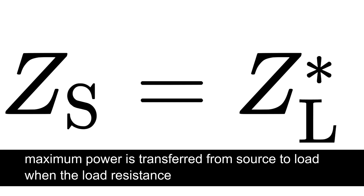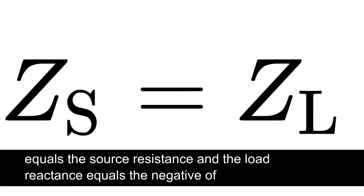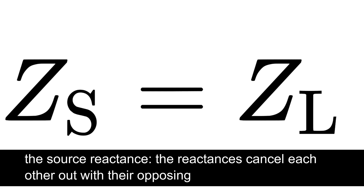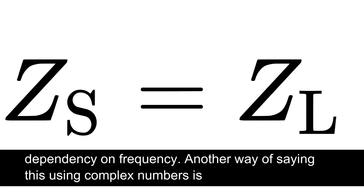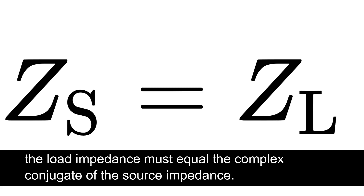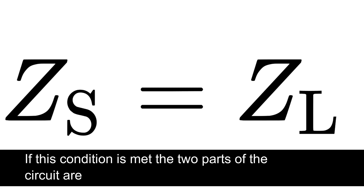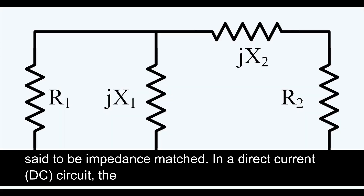The maximum power theorem states that maximum power is transferred from source to load when the load resistance equals the source resistance and the load reactance equals the negative of the source reactance — the reactances cancel each other out with their opposing dependency on frequency. Another way of saying this using complex numbers is the load impedance must equal the complex conjugate of the source impedance. If this condition is met, the two parts of the circuit are said to be impedance matched.